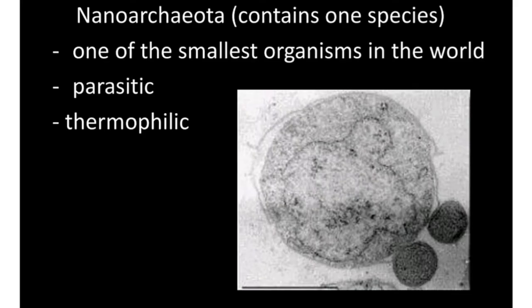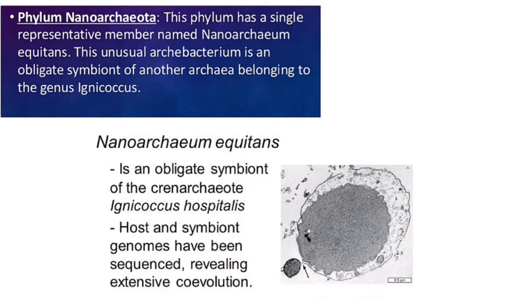Nanoarchaeota consists of obligate symbionts. They have a genus called Igneococcus, and there is a single representative member in this group: Nanoarchaeum equitans.